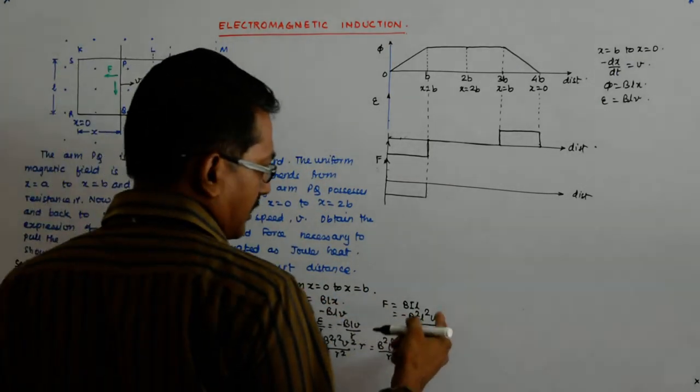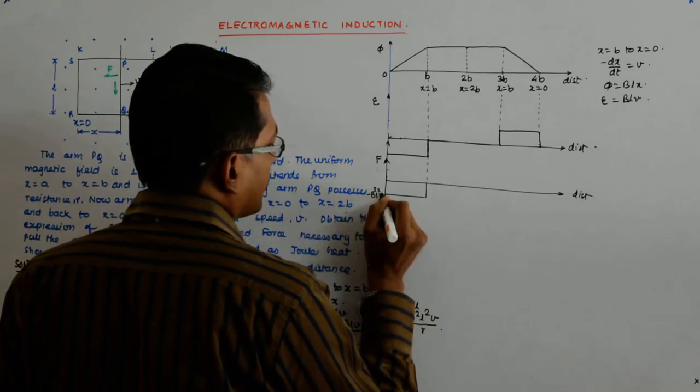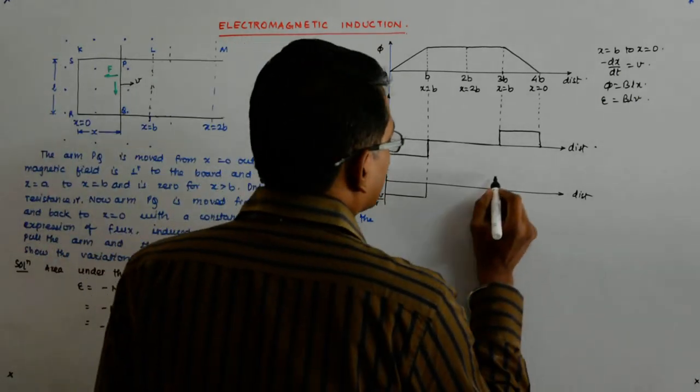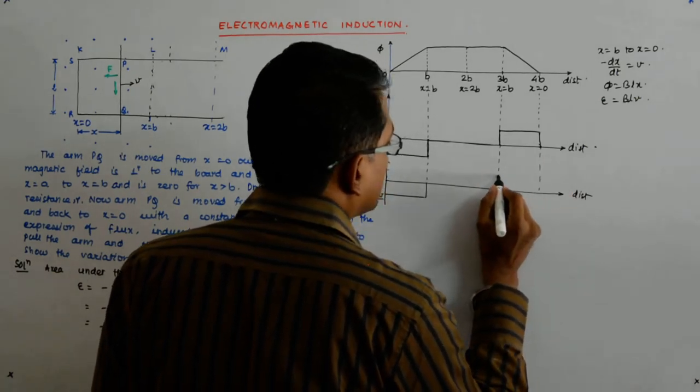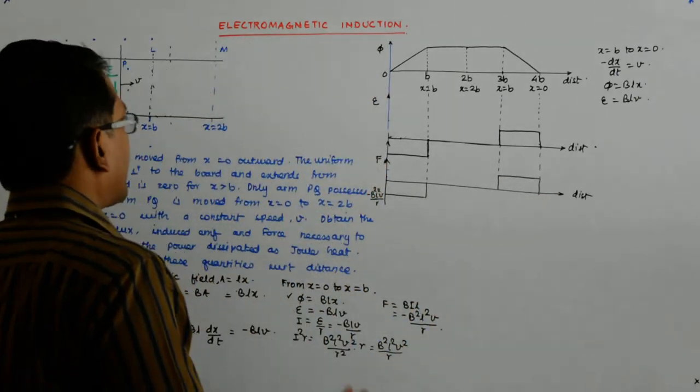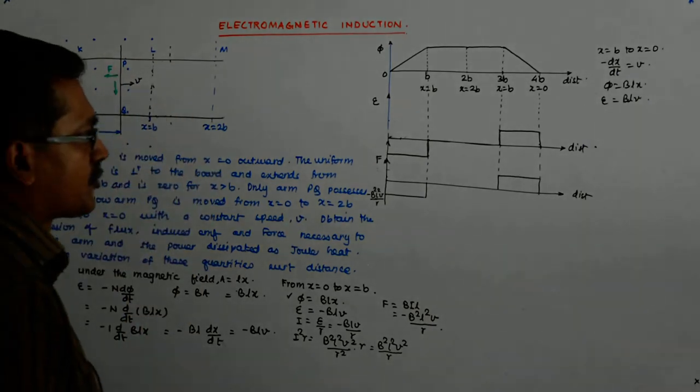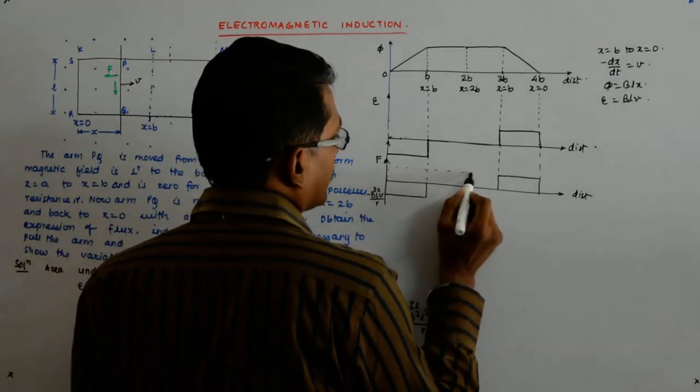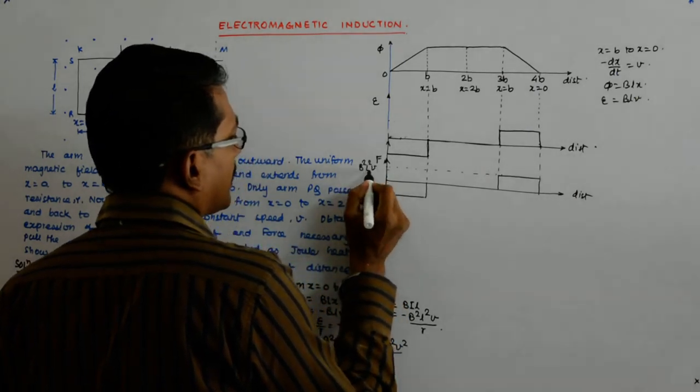b square l square v by r. And here, when you are trying to pull it in, the force reverses, tries to pull you out. And obviously this value is v square l square v by r.